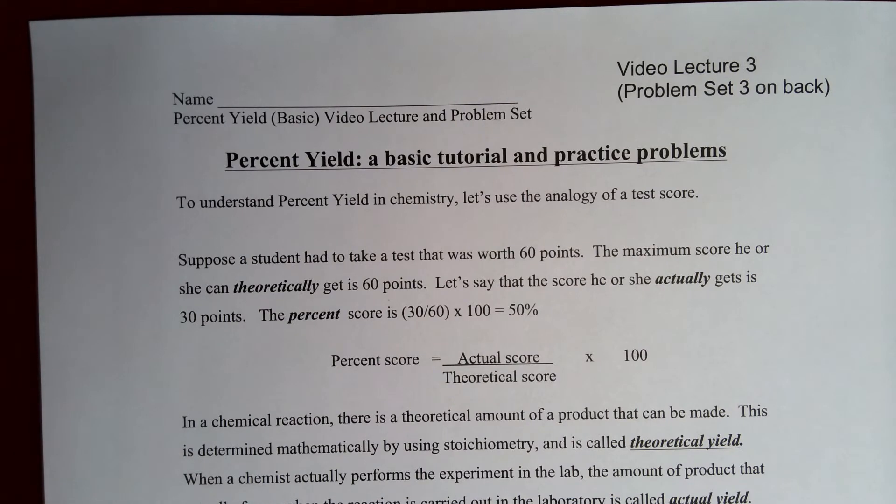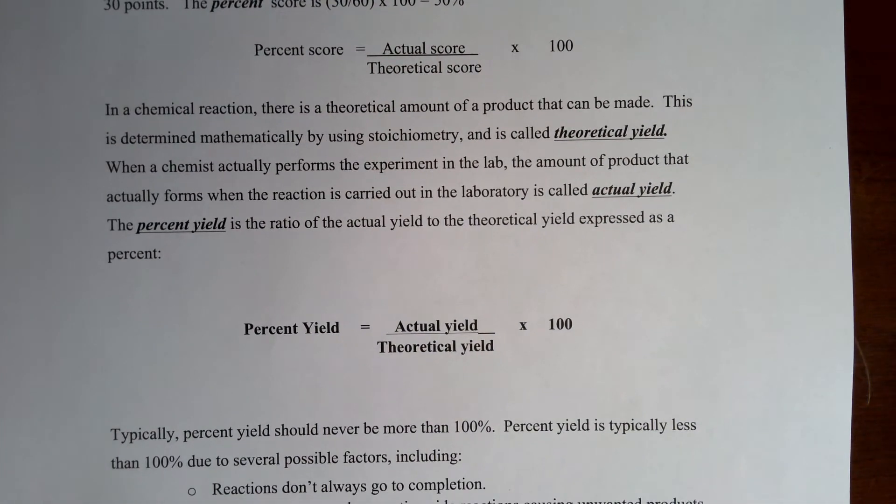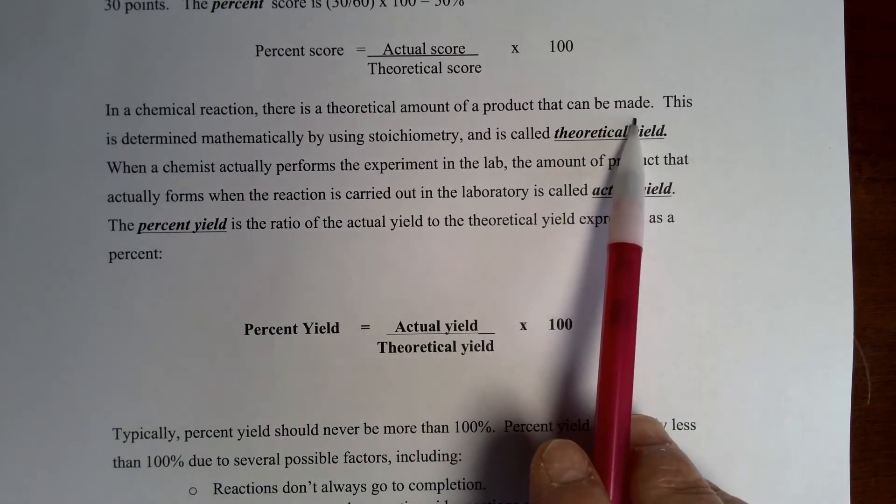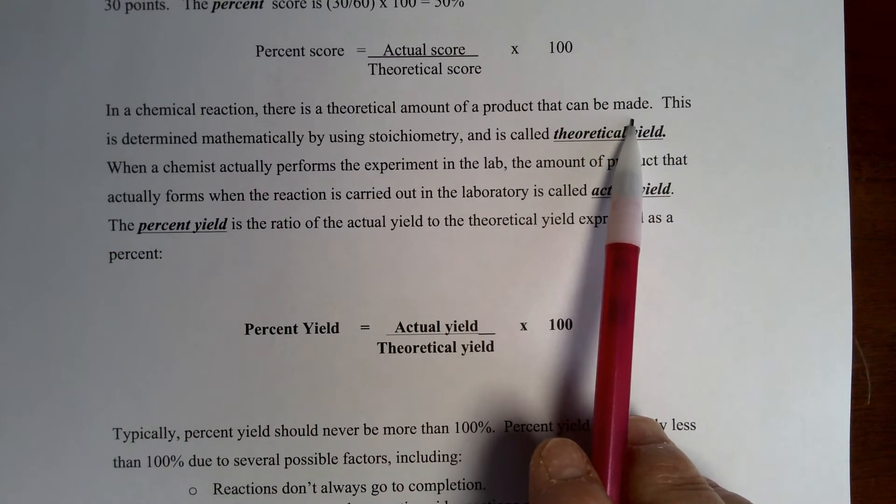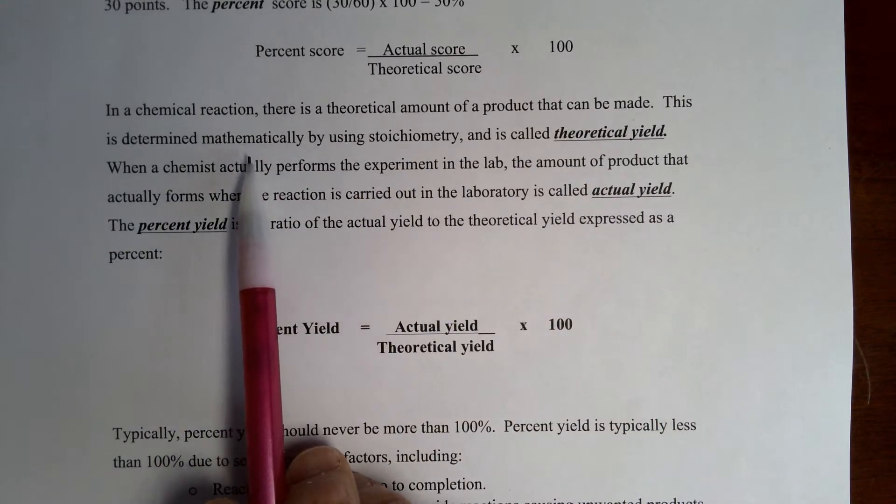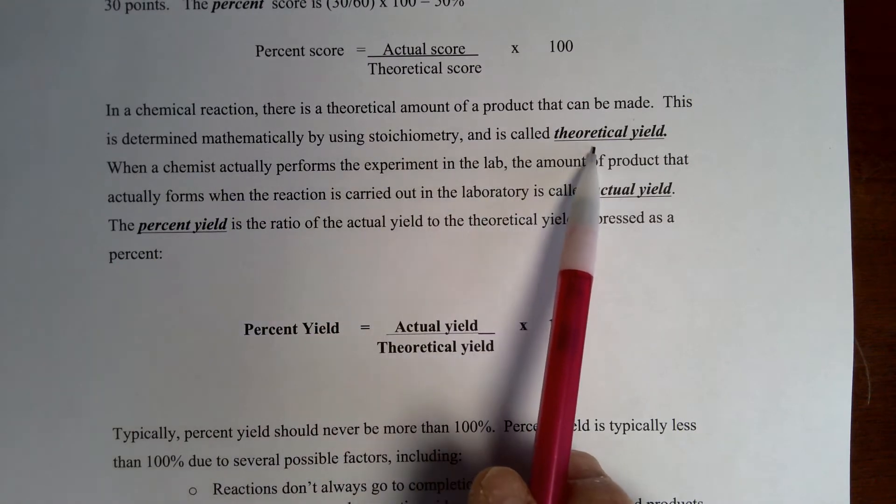In a chemical reaction, there is a theoretical amount of product that can be made. This is determined mathematically by using stoichiometry and is called theoretical yield.